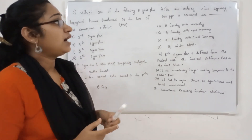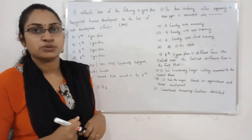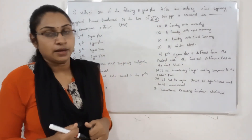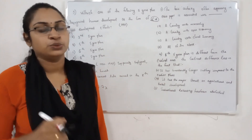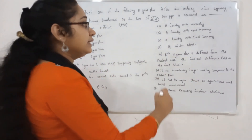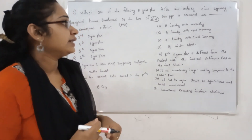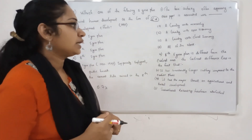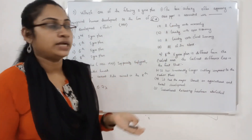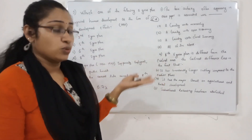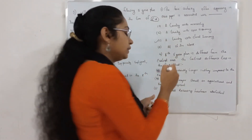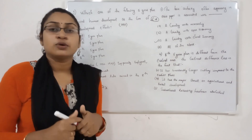Question number 3: The term 'Autarky', often appearing in newspapers, is associated with which of the following? This is a current affairs question. The options are: a country with a monarchy, a country with an open economy, a country with a closed economy, or all of the above. The answer is: a country with a closed economy.